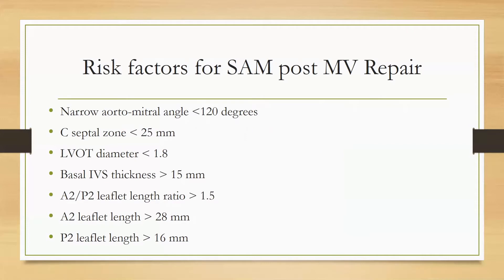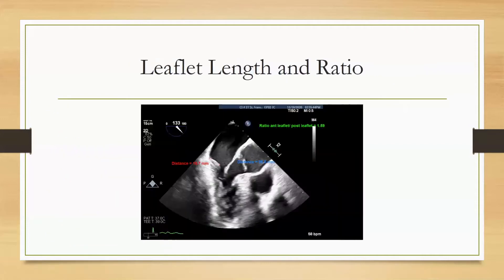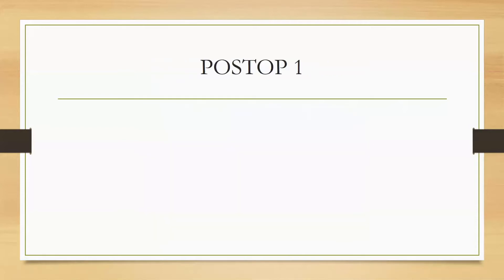We had calculated the risk factors for this patient from our prior video. The main findings are the presence of pre-existing cortal SAM and a ratio of anterior leaflet to posterior leaflet length of 1.59. So the risk for cortal SAM was increased, and this was relayed to the surgeon.